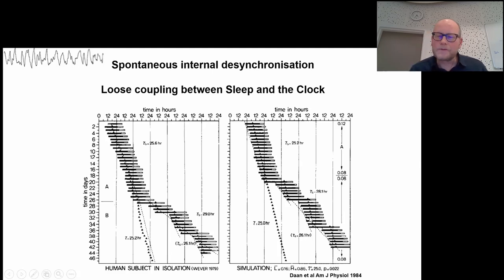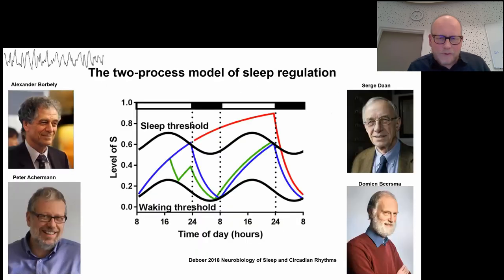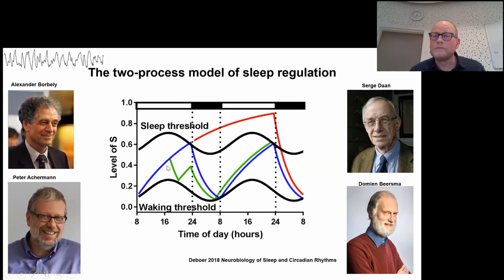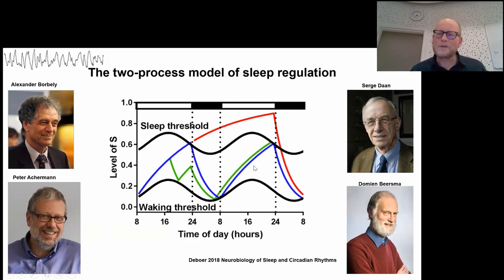So that was the other reason the model was introduced — it could explain with one clock and the homeostatic process the unusual data that was found. This is the two-process model of sleep regulation introduced about 40 years ago by Alex Borbély, Serge Daan, and Domien Beersma from Groningen, and the Zürich group. Later Peter Achermann joined, and these people pushed this forward. The simple model allows you to try at home: whatever you do — sleep-deprive yourself until morning — within two days you are back in phase with your normal sleep schedule.